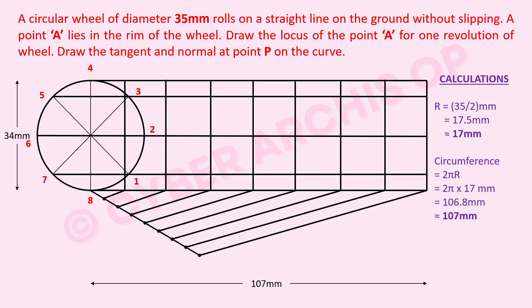Mark the points on the circle anti-clockwise, numbered 1 through 8. You can also use 12 or 6 divisions if preferred, but 8 is used here for better precision. Mark the center positions: the original center is C0, followed by C1, C2, C3, C4, C5, C6, C7, and C8 along the center line.